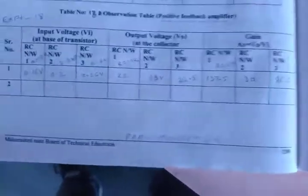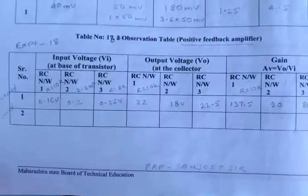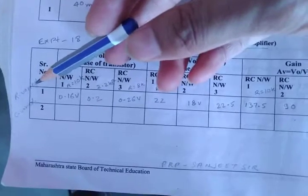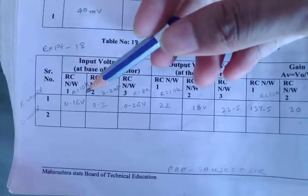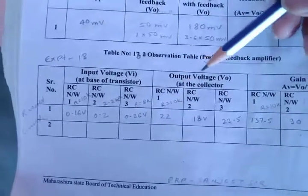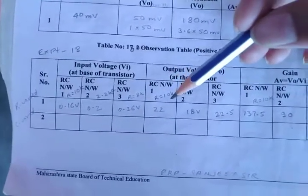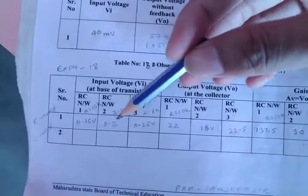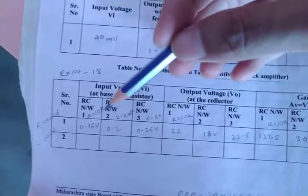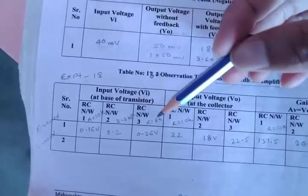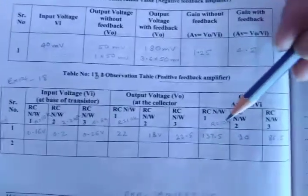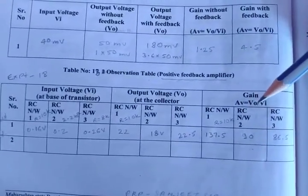Here is the observation table for the 18th experiment for the positive feedback amplifier. By varying the resistance value, we observe the input voltage at the base of the transistor and the output voltage at the collector. Three different resistance values used are 10 kilo ohm, 2.2 kilo ohm, and 8 kilo ohm. The respective output voltages are noted and the voltage gain is calculated as V-out divided by V-in.